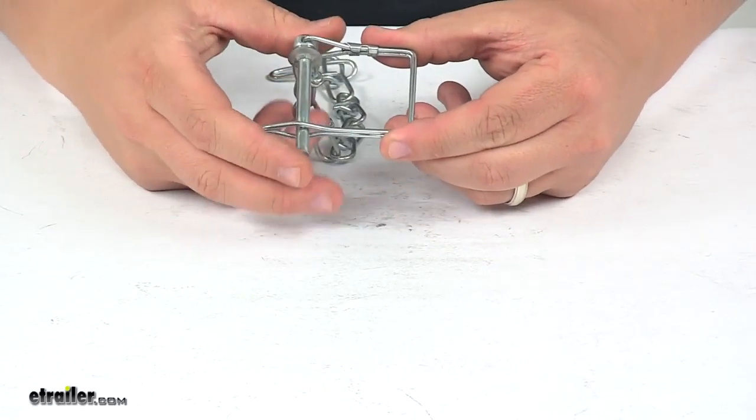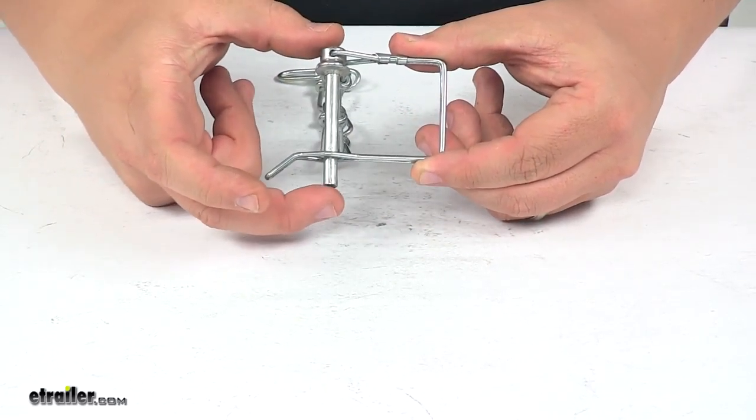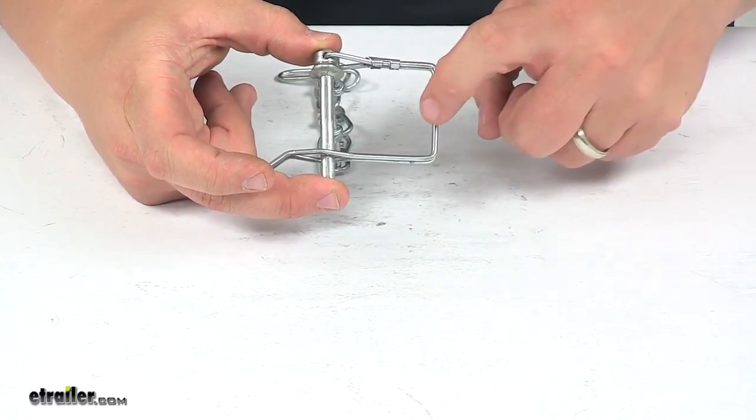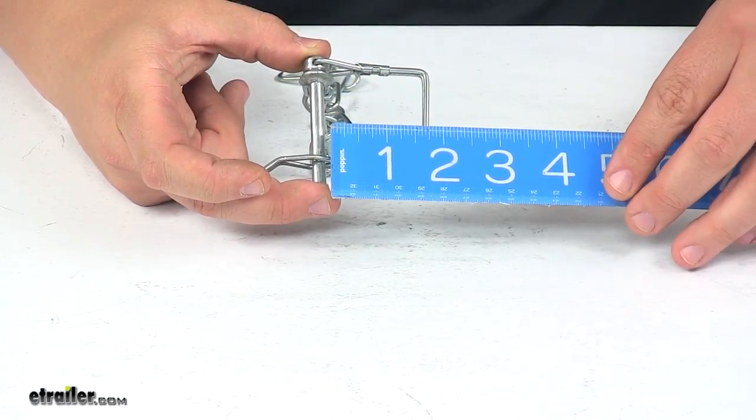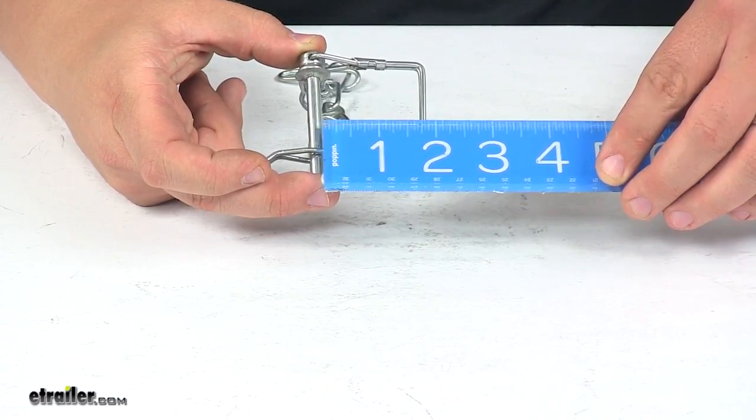And then the space that we have, so we want to make sure our pin is straight, from the top of the pin to the bottom of the clip, when I did that measurement, I get a measurement of about one and three-quarter inches.